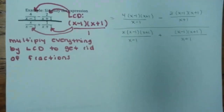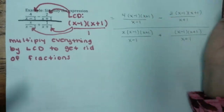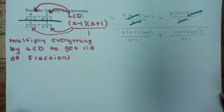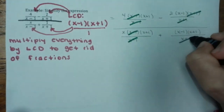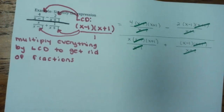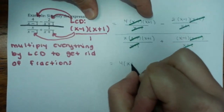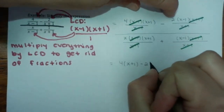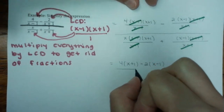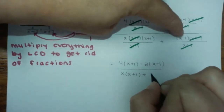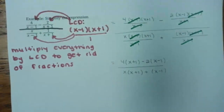So now let's cancel to see what cancels out. Everything should cancel out nicely — if it didn't, you have the wrong LCD, so go back and check your work. The x minus 1's are gone, the x plus 1's are gone. So now we're just left with 4 times x plus 1, minus 2 times x minus 1, all over x times x plus 1, plus x minus 1.